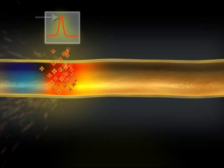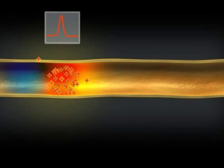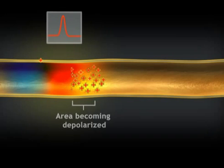But how is the action potential propagated down the axon? Look at the area just ahead of where the action potential has just fired. It is becoming more depolarized.